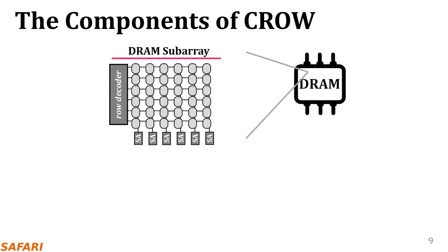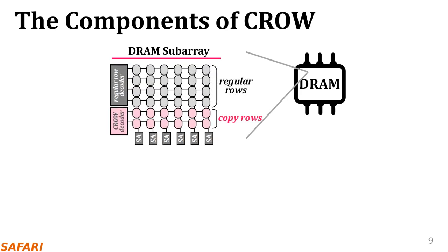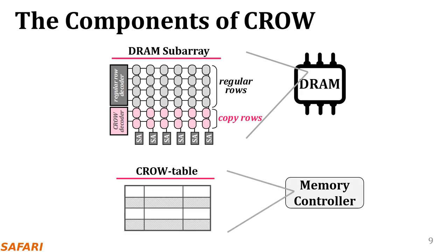However, it's not possible to duplicate and remap data in current DRAM. To enable that, the CROW substrate implements two key components. First, CROW slightly modifies the DRAM subarray by introducing copyrows in addition to the regular rows in conventional DRAM. A copyrow is composed of the same DRAM cells a regular row is composed of. Different from the regular rows, copyrows have their own address decoder. This enables a copyrow to be activated independently from a regular row. Second, CROW implements a small table in the memory controller to store information related to operations performed on copyrows.